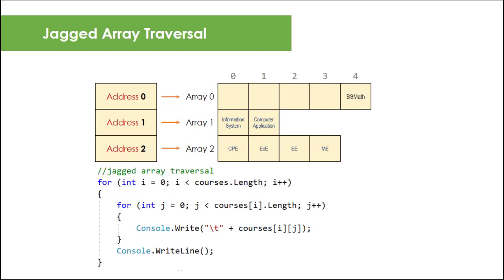To traverse in a jagged array, we can use the arrays length property to access all elements using a nested loop. In the outer loop you can say courses.length instead of the getlength method used in a 2D array. And in the inner loop courses[i].length because for every row represented by variable i, the reference array has its own defined size that's different from the other.